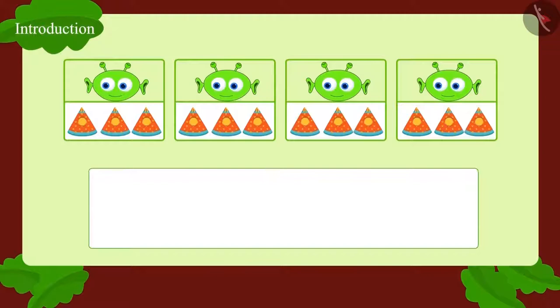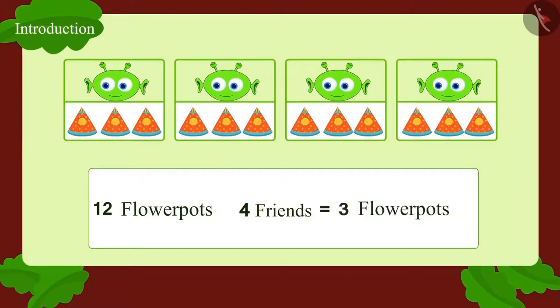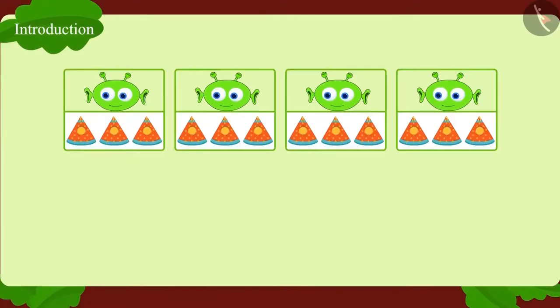In this way, 12 flower pots have been divided among 4 friends. How many flower pots did each friend get? Absolutely right! 3 flower pots.